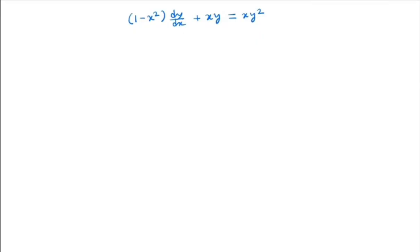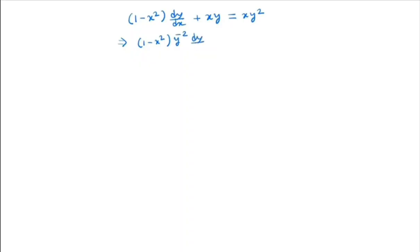I have already made a video on how to solve Bernoulli's differential equation — you can check that video, I will give the link in the description box. Basically in this method, what we do is divide both sides by y squared. So we get (1 - x²) · y^(1-2) · (dy/dx) + x · y⁻¹ = x.